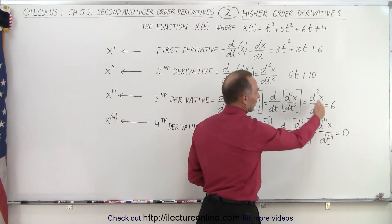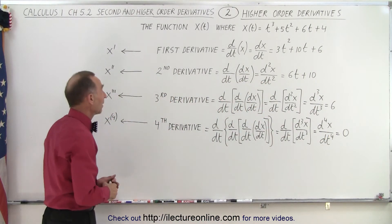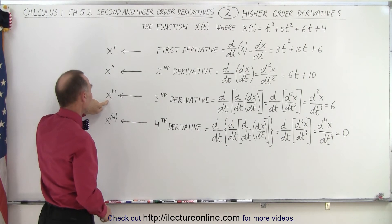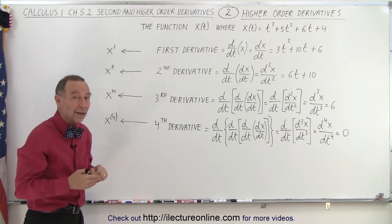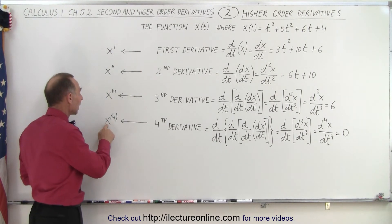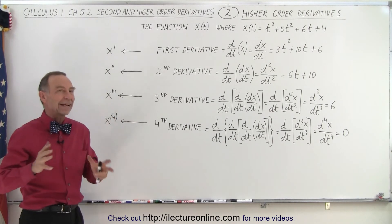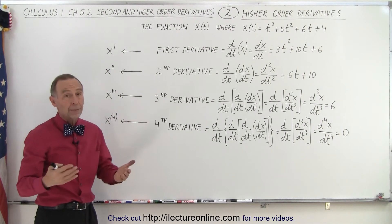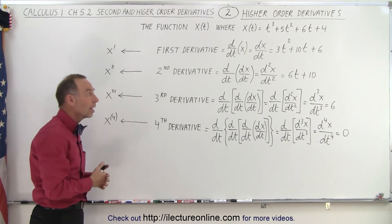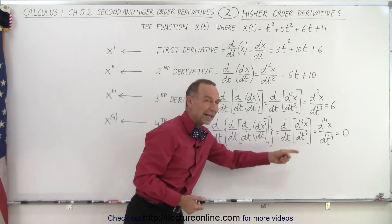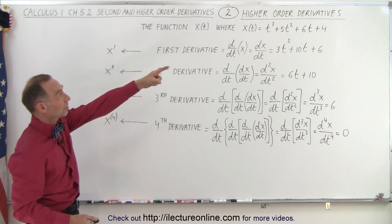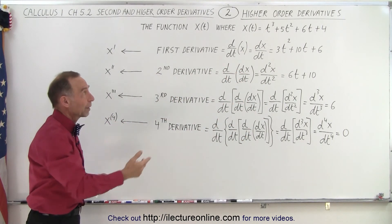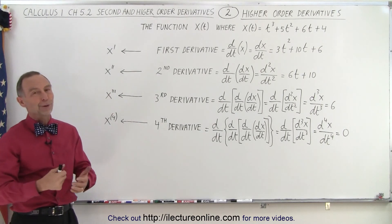Sometimes people think this is a lot to write, so there's a shorthand method. We can write the first derivative of x as x prime, the second derivative as x double prime, the third as x triple prime, and the fourth as x with a superscript (4) in parentheses — to indicate it's not an exponent. When you write it this way, you don't know if it's with respect to time or another variable, so you get that from context. But if you see that t is the independent variable and x is the dependent variable, x prime is understood to mean the derivative with respect to time.